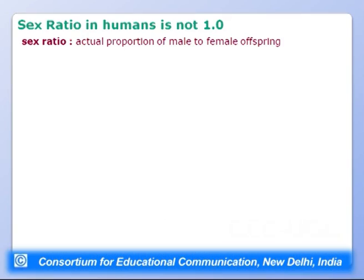Because males produce two types of haploid gametes — containing either X or Y — and females produce haploid gametes containing X, the sex ratio in humans should theoretically be 1. The sex ratio is defined as the actual proportion of male to female offspring, with a 50-50 chance for either sex.